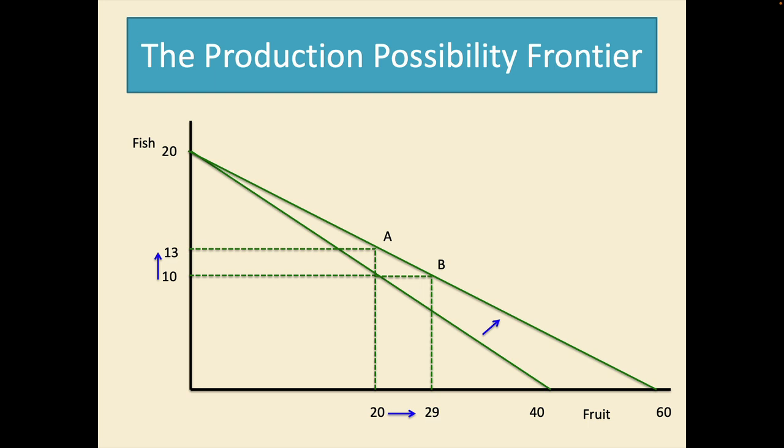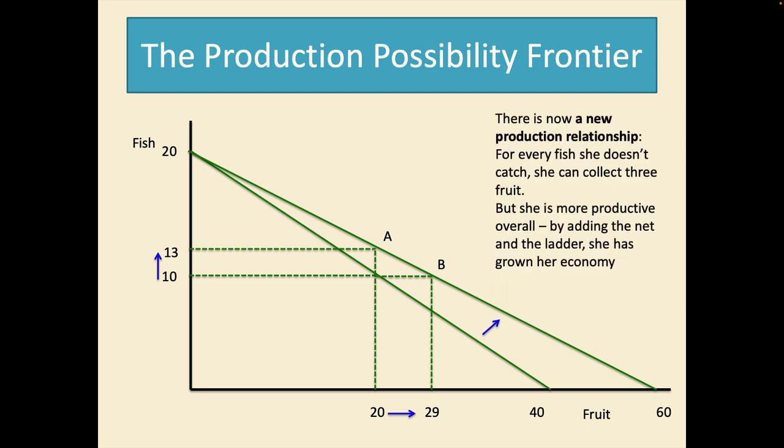But it also means that she's more productive in both areas overall by adding the net and the ladder. She's basically grown her economy from when she's walking around trying to catch fish by hand, difficult to do, and trying to pick fruit by hand, a bit easier.